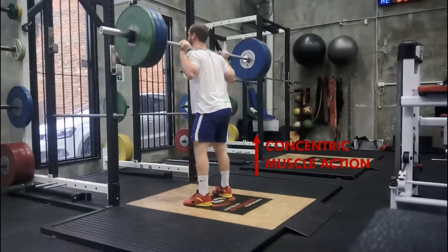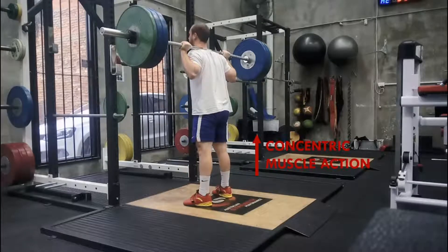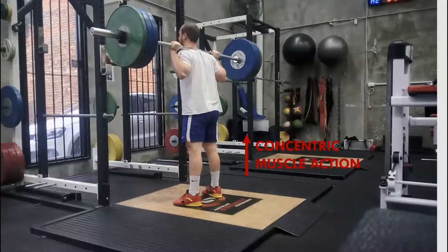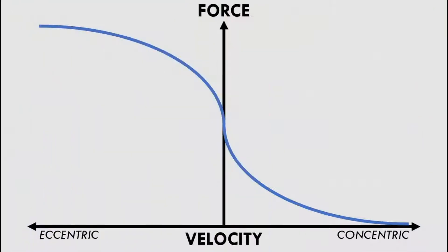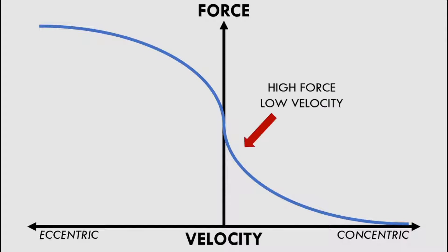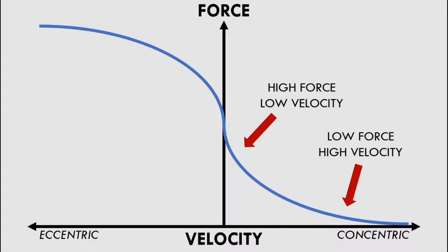Essentially, for concentric muscle actions, force and velocity have an inverse relationship with regards to athletic exercises. This means that when force is high, velocity is low, and when force is low, velocity can be high.